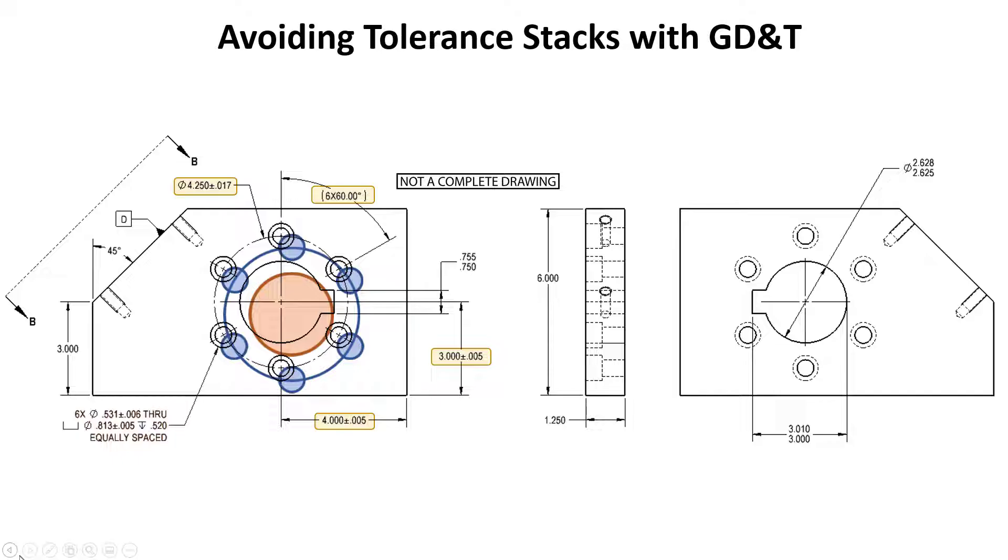Now, if you design your tolerances and your part with this assumption, and your QC department decides to inspect these features as separate features, both being located plus or minus five thousandths, you'll definitely have an issue with tolerance stack-up.